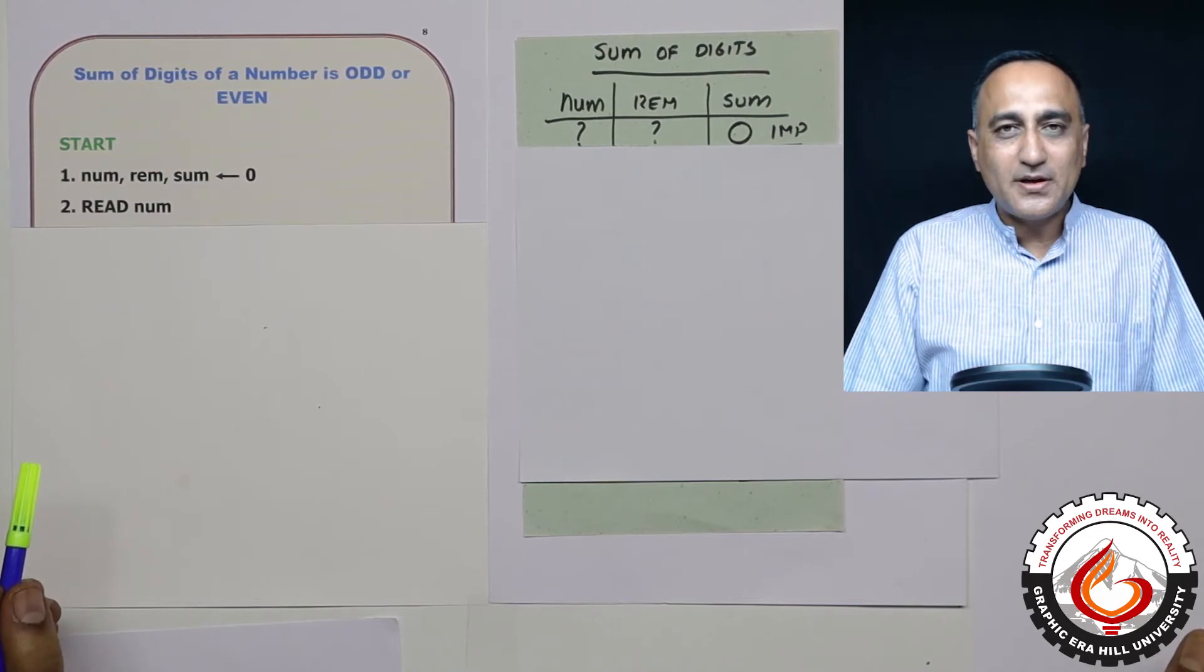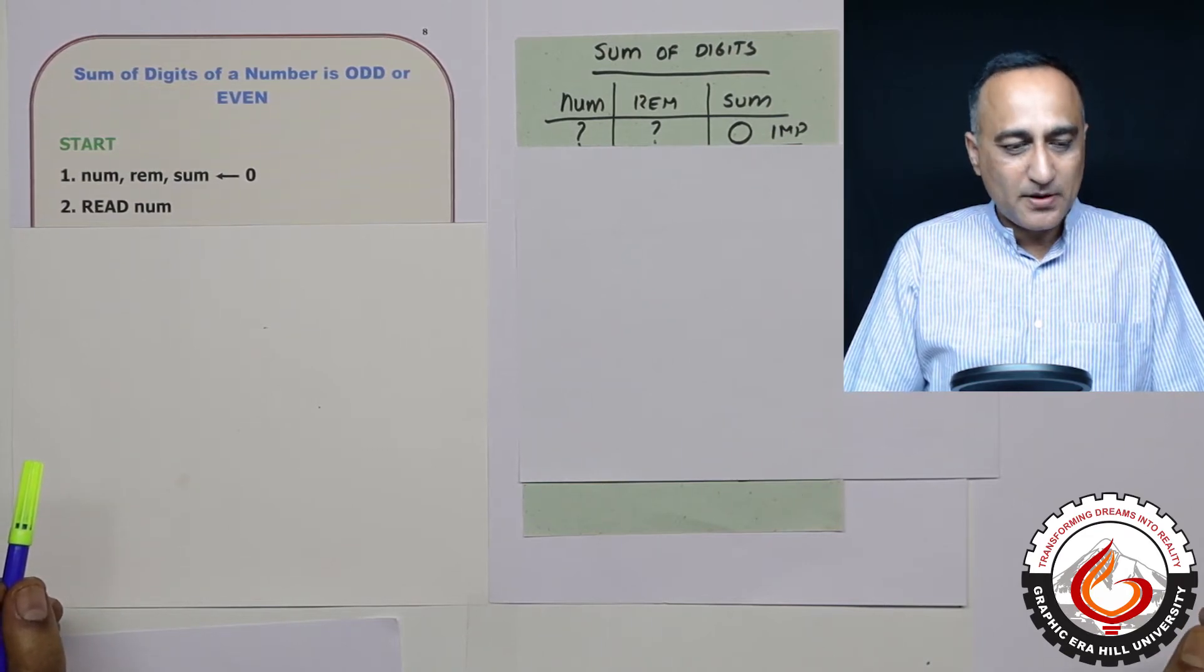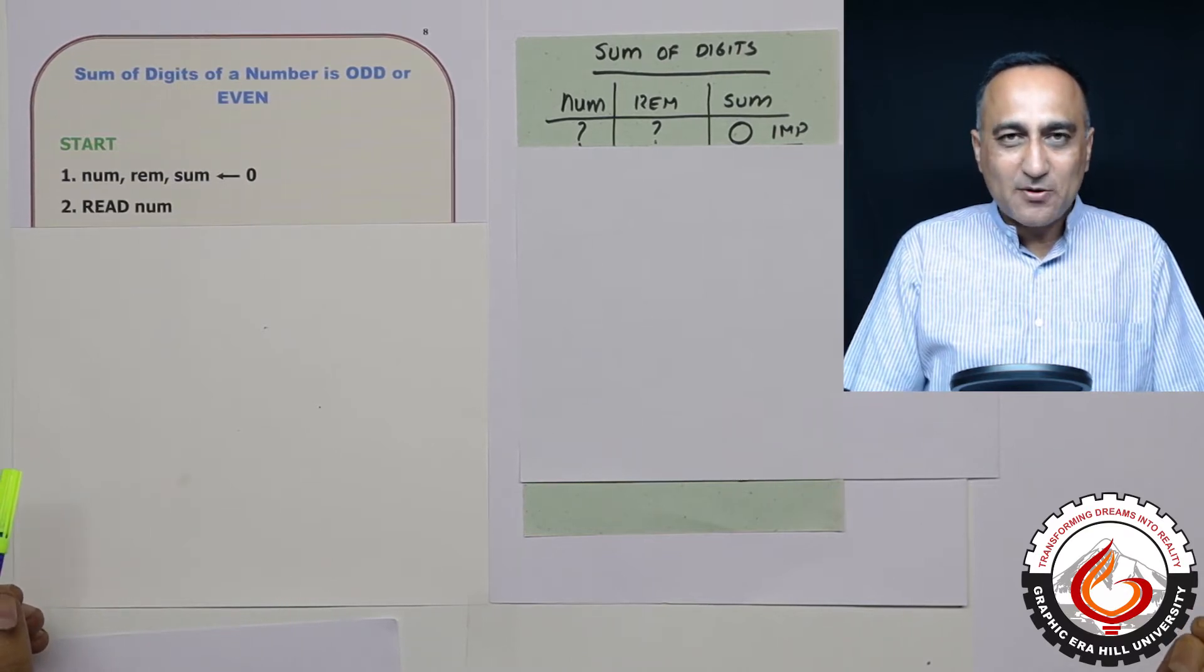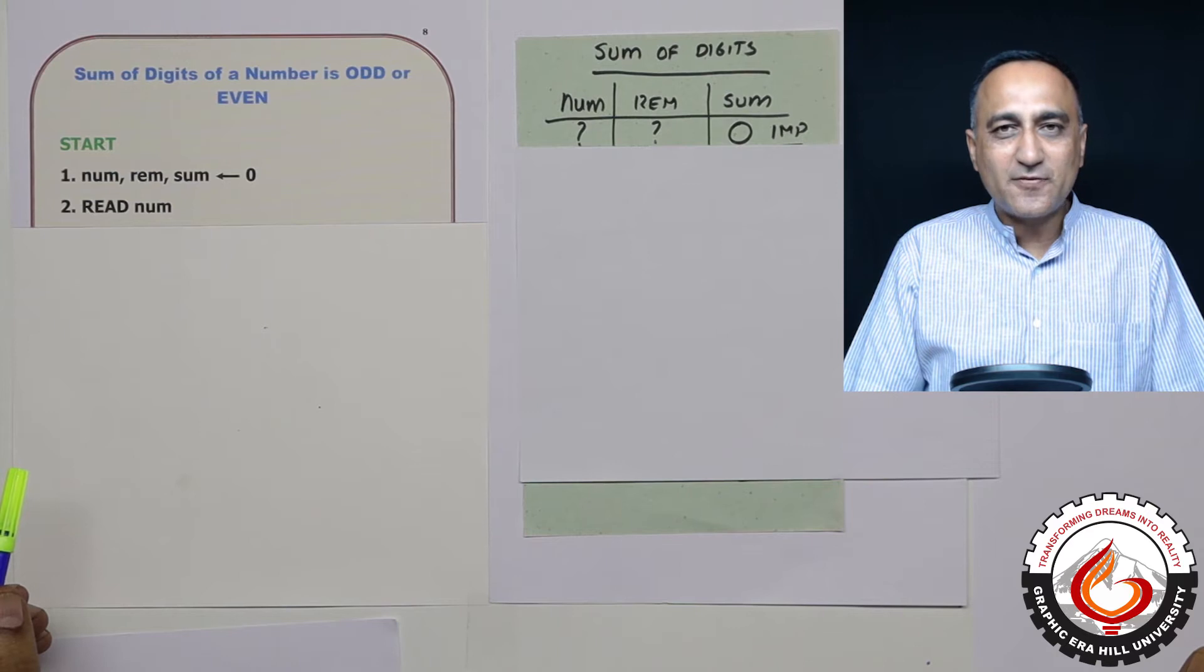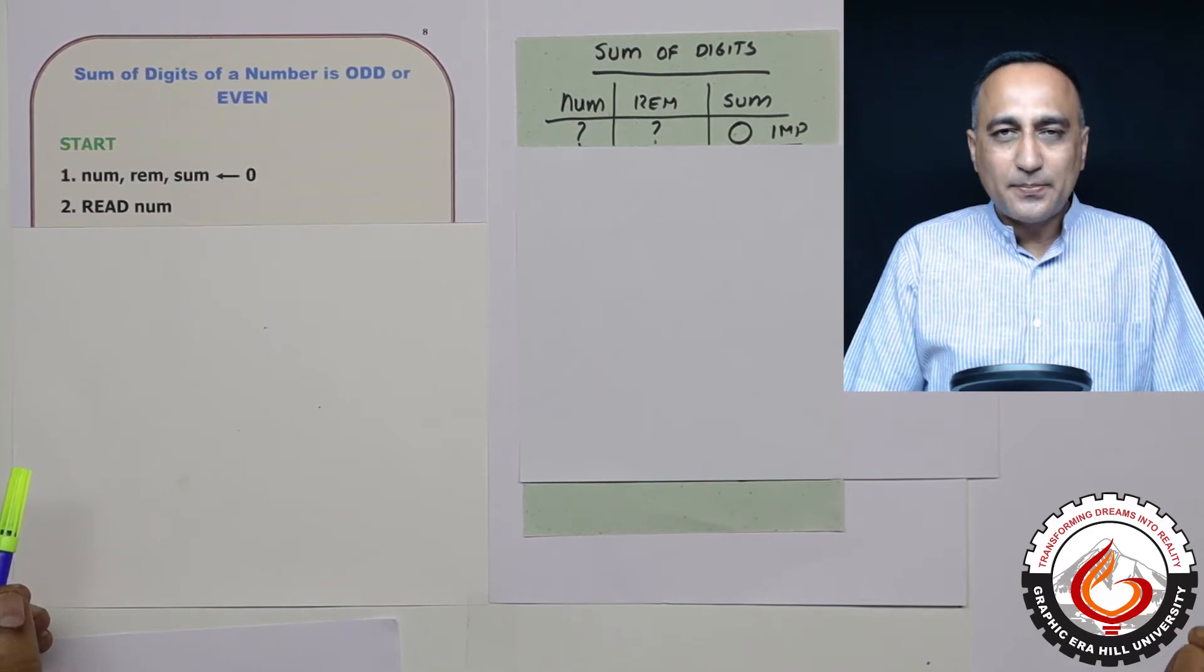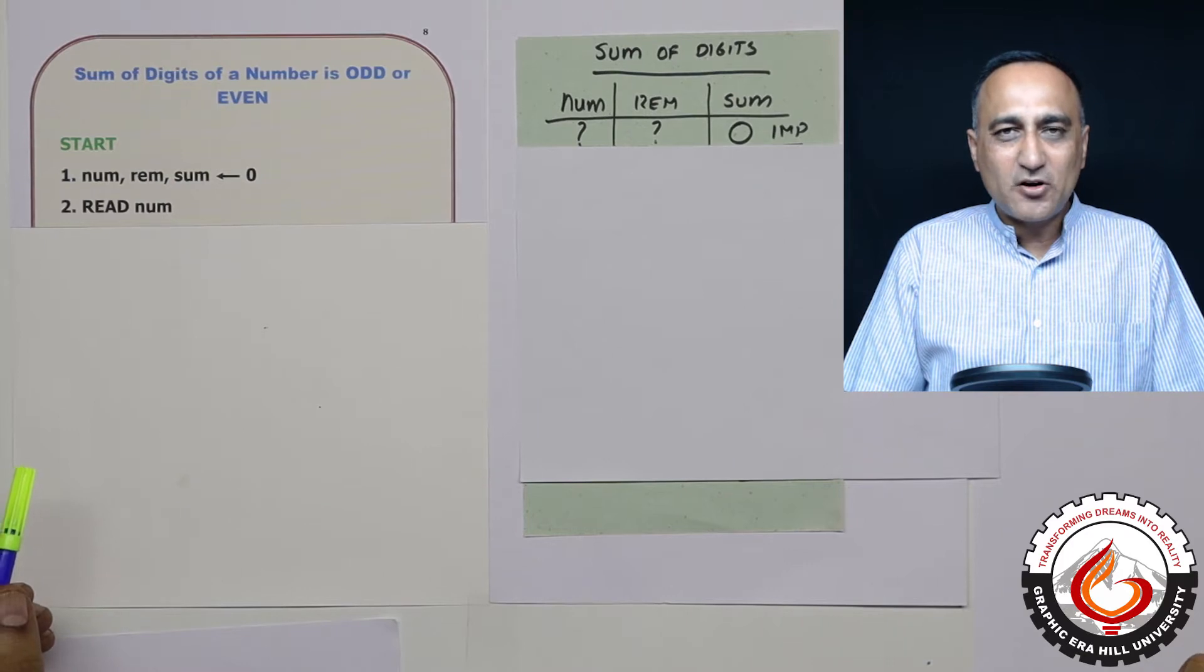This is a solution of a looping assignment problem where you are asked to find the sum of the individual digits of a number and then print whether that sum is even or odd.